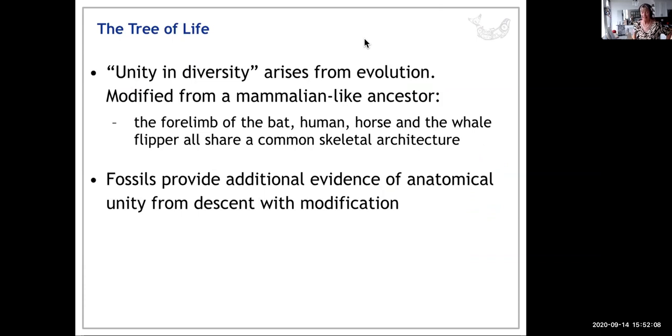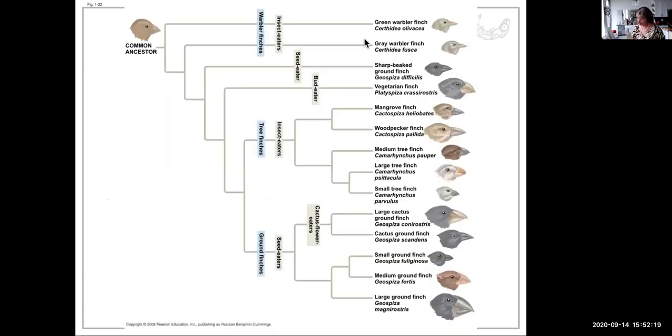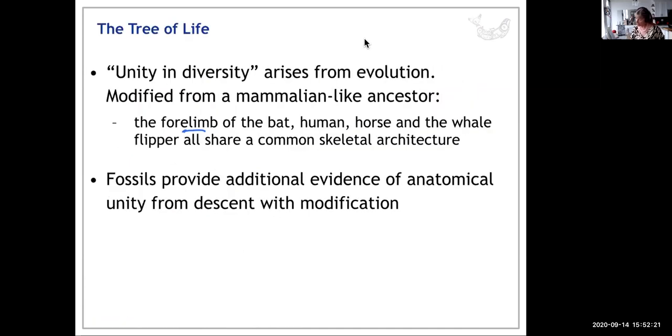Unity and diversity arises from evolution. The forelimb of a bat, the human, a horse, a whale, a flipper—they all share common skeletal architecture, and that is one area of evidence for evolution. We also look at fossils, as Darwin did, which provide more evidence of anatomical unity.